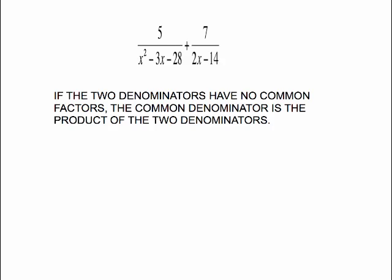This is the fourth video in our adding and subtracting rational expressions series. If we're going to add these rational expressions, we know we need a common denominator. Our rule has been: if the two denominators have no common factors, then the common denominator is the product of the two denominators.